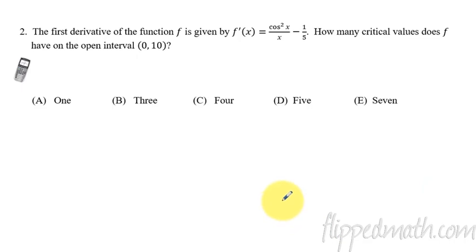Number 2. We're looking at how many critical values does f have. So we're going to have critical values when the derivative does not exist, or when the derivative equals 0. So the derivative does not exist. The only place this thing doesn't exist is when x is 0. So this happens when x equals 0. But if you look on the interval, it says the open interval from 0 to 10. So x equals 0 is not within the interval because we're not including 0. So we only need to check when f prime equals 0.